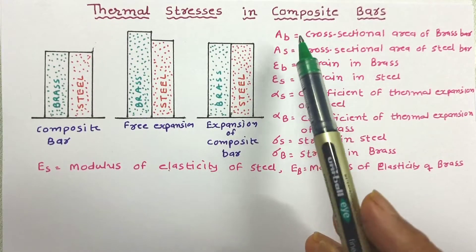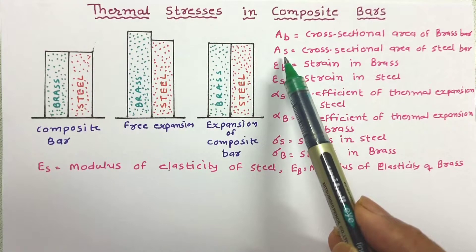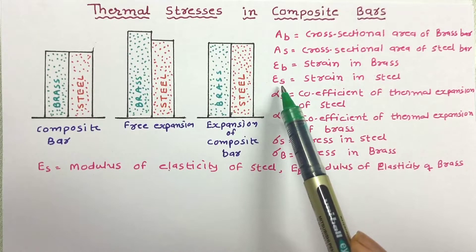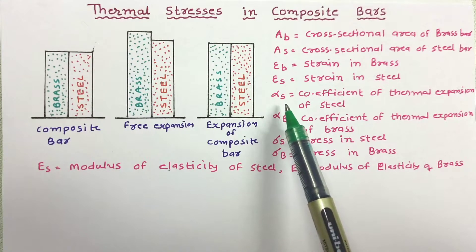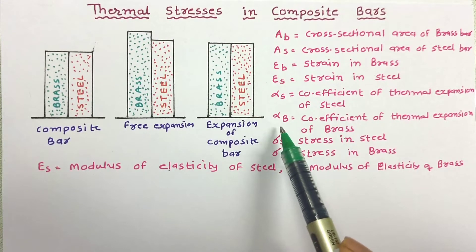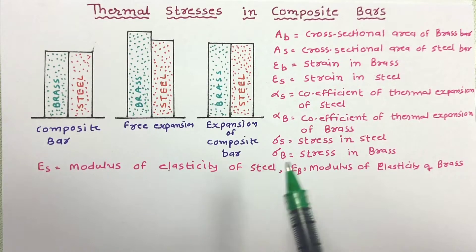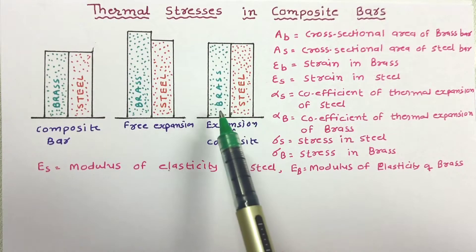Now here are some important notations: Ab and As are the cross-sectional areas of the brass and steel bars; εb and εs are the strains in brass and steel; αs and αb are the coefficients of thermal expansion of steel and brass; σs and σb are the stresses in steel and brass; and Es and Eb are the moduli of elasticity of both materials.